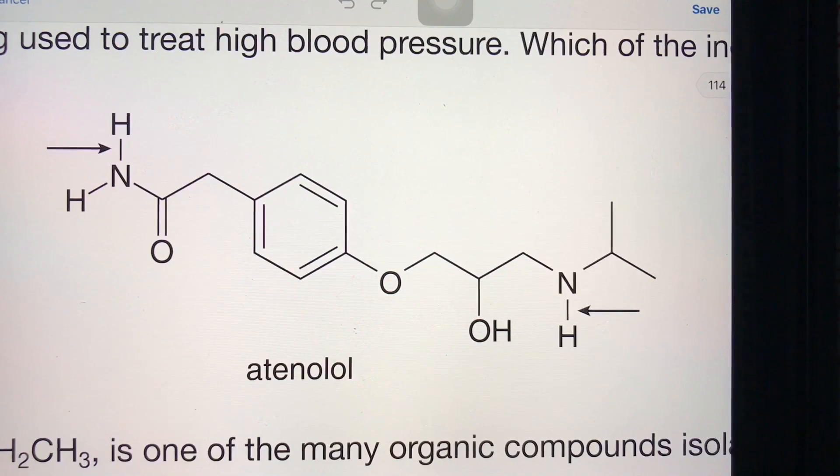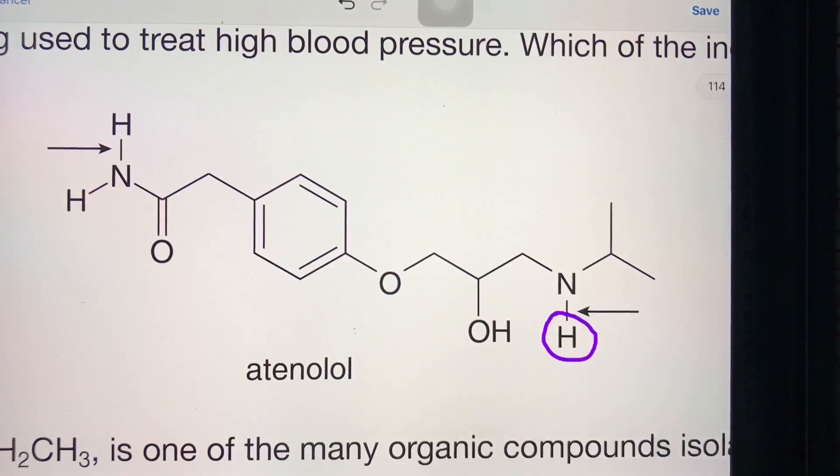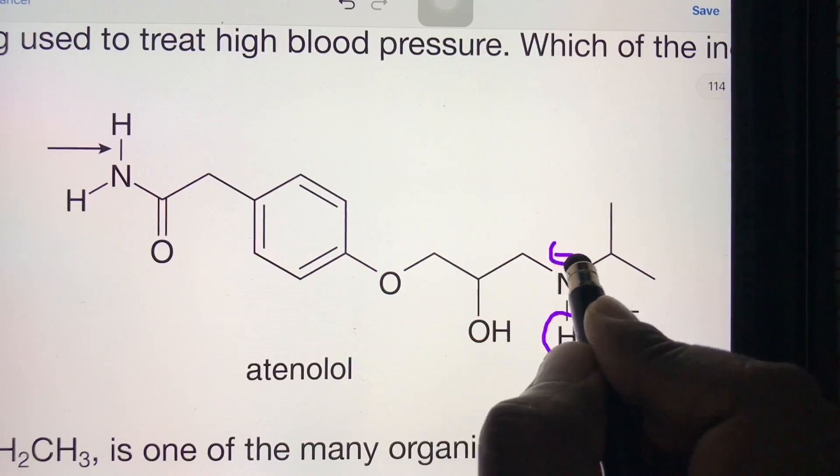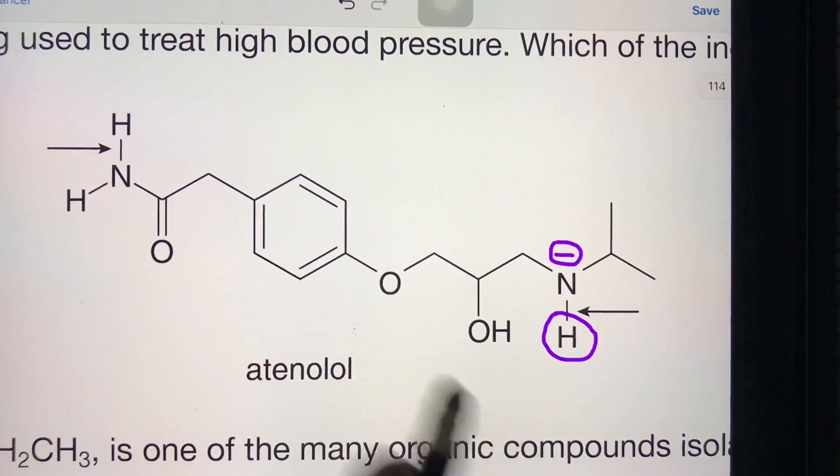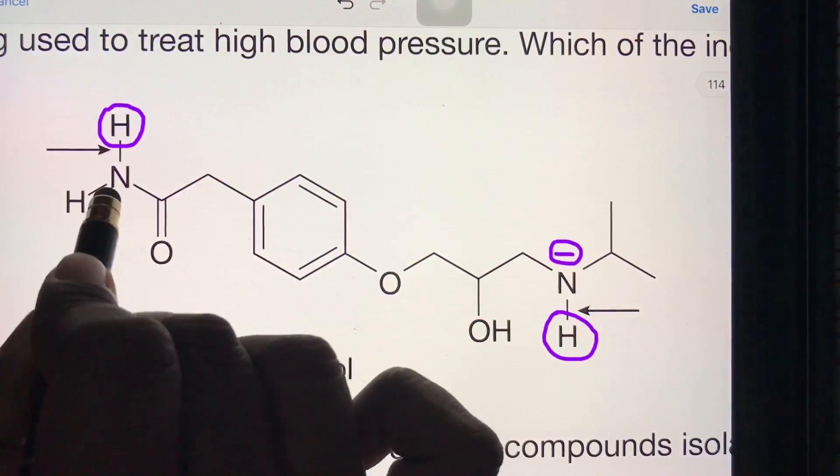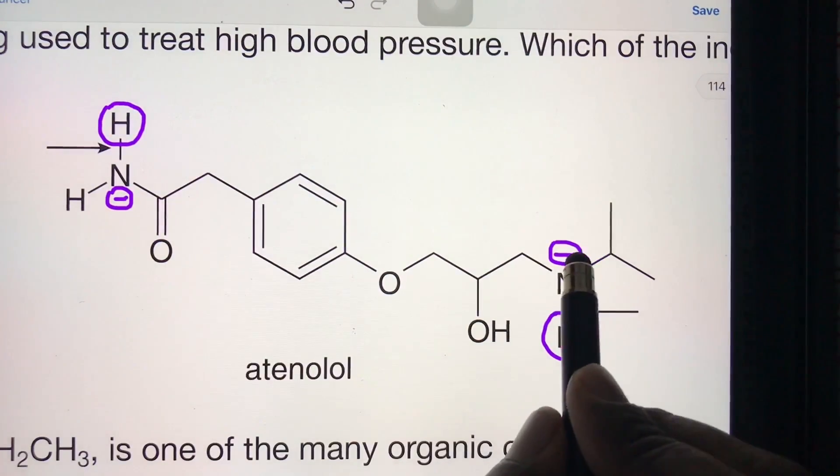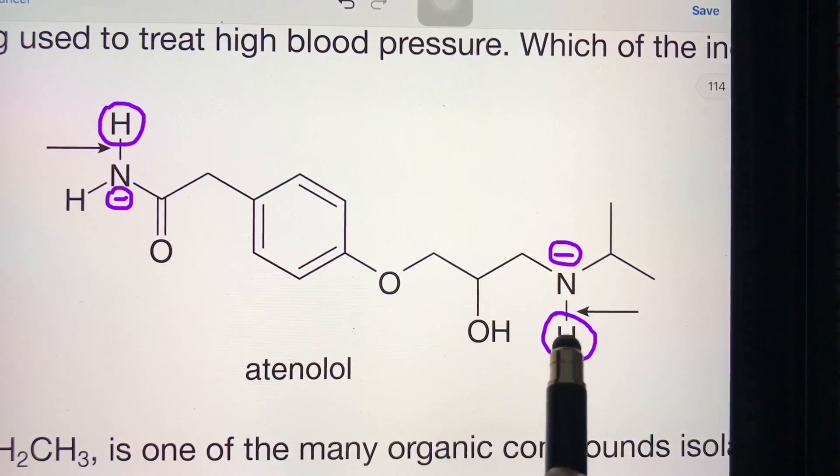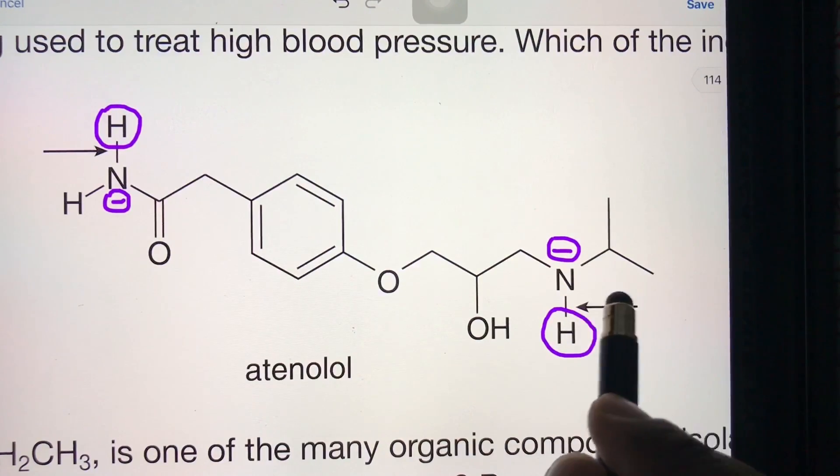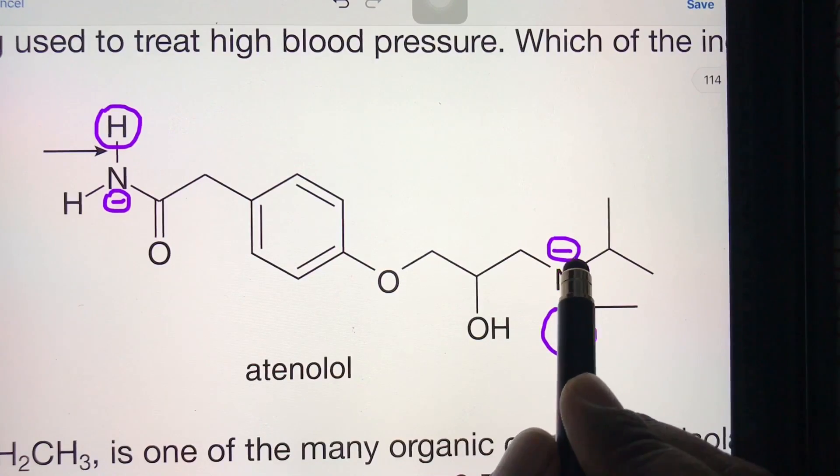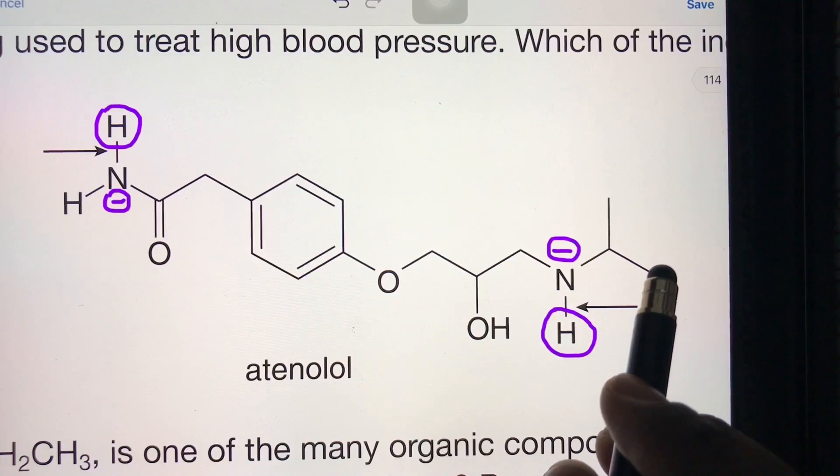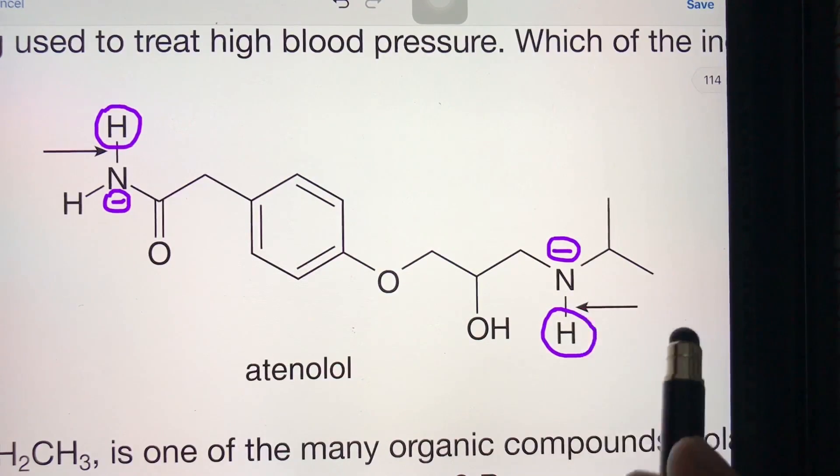If H+ is removed from this nitrogen, a negative charge will appear on this nitrogen. The negative charge obtained after removal of H+ is localized on this nitrogen, so it's not going anywhere. It's not participating in any resonance, so this is not a very stable conjugate base.